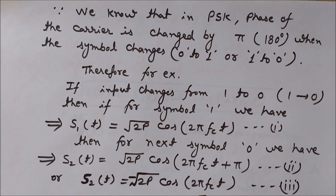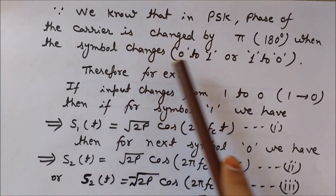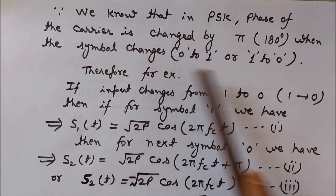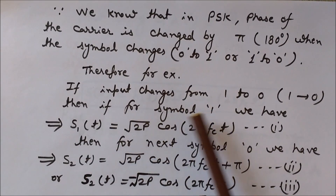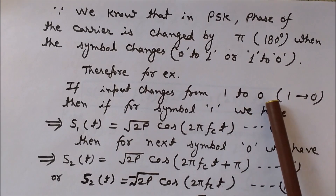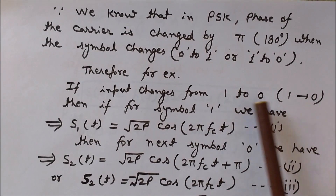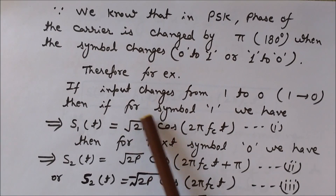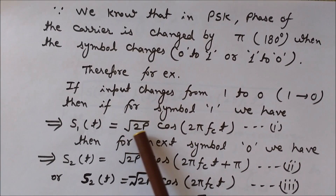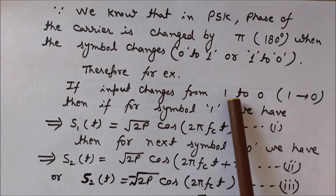In deriving the BPSK equation: the phase of the carrier is changed by pi, or 180 degrees, whenever there is a change in the binary symbol from 0 to 1 or from 1 to 0. For symbol 1, the carrier wave s1(t) = √(2P) cos(2π fc t). For symbol 0, since there is a phase shift of pi, we write s2(t) = √(2P) cos(2π fc t + π).